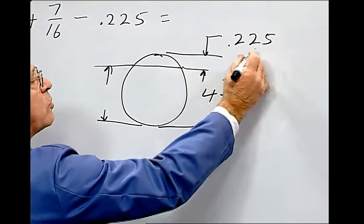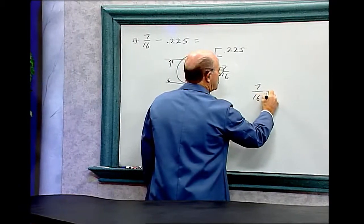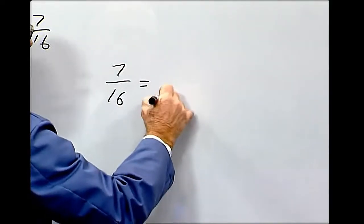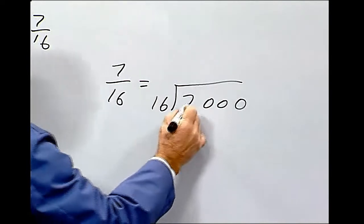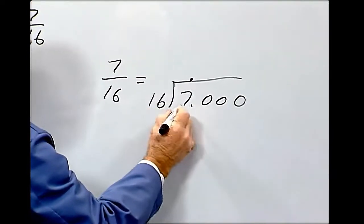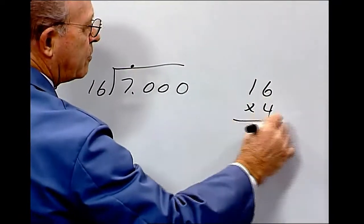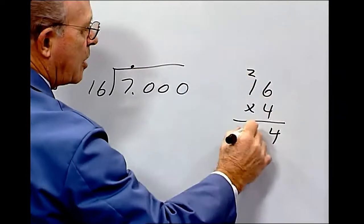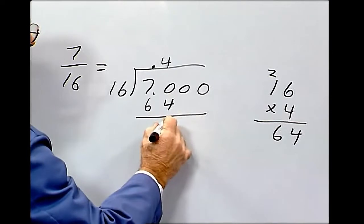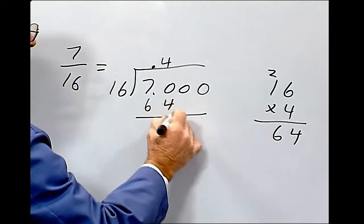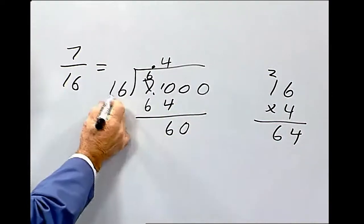So we have to deduct 225 thousandths from 4 7/16. So let's change 7/16 into a decimal so we can subtract 225 thousandths from 4 7/16. So 7/16 equals, and we'll divide then 7.00 by 16. So bring up the decimal point. 16 goes into 70 how many times? 16 times 4 equals 64. And bring down the 0.